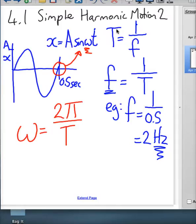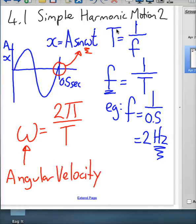Why 2 times pi? We'll get to that in just one second. The units for this, and let's give it a name, it's called the angular velocity. The units are radians per second.